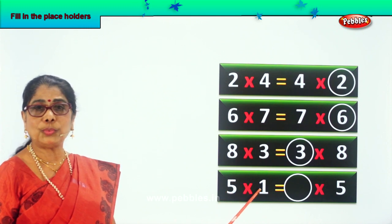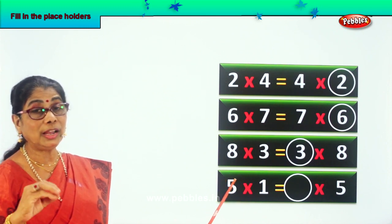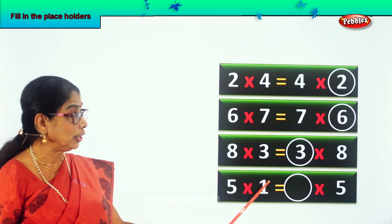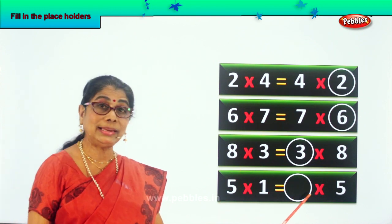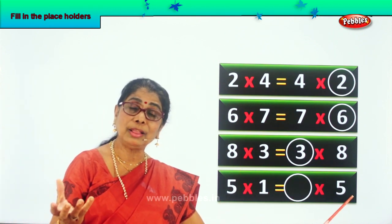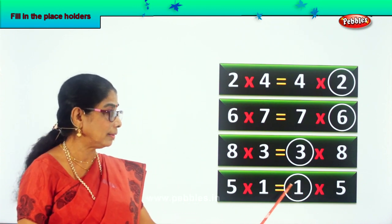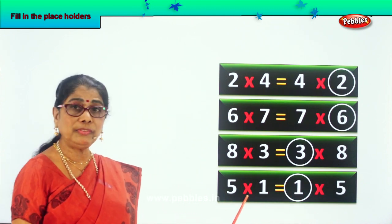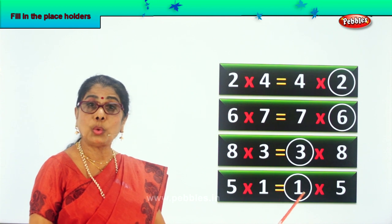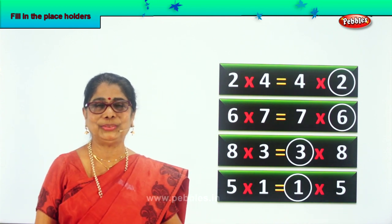Look. 5 into 1. 5 ones are 5. This is also equal to dash into 5. How to get the answer 5? What number should come here? 1. Correct. So 5 into 1 is equal to 1 into 5. Very good.